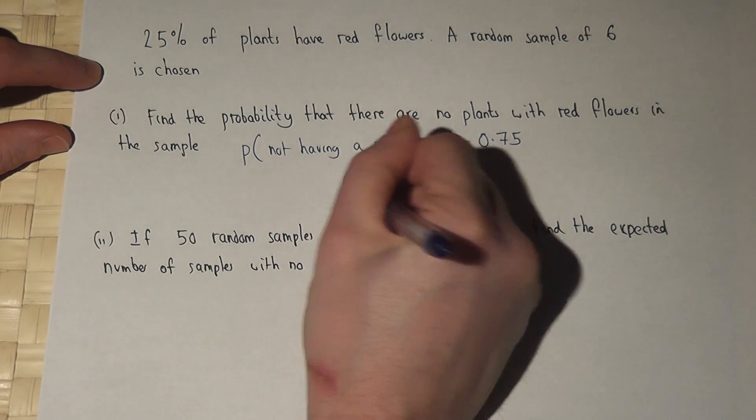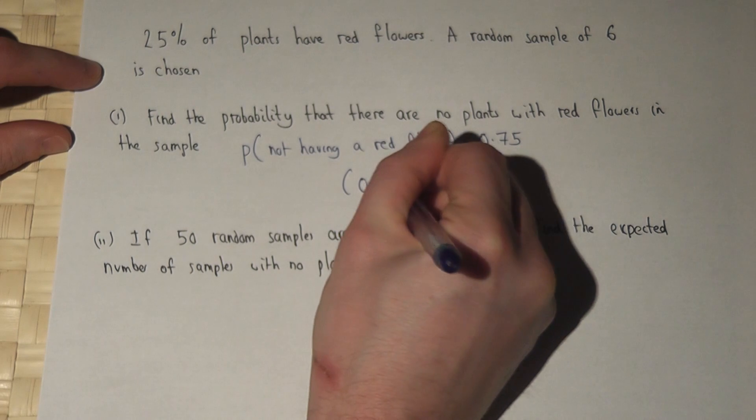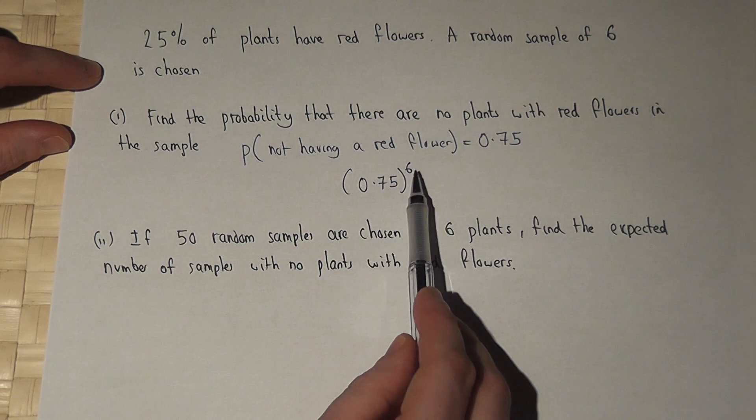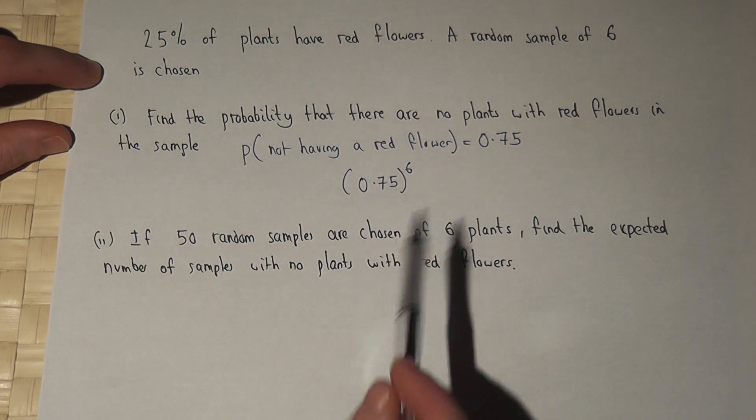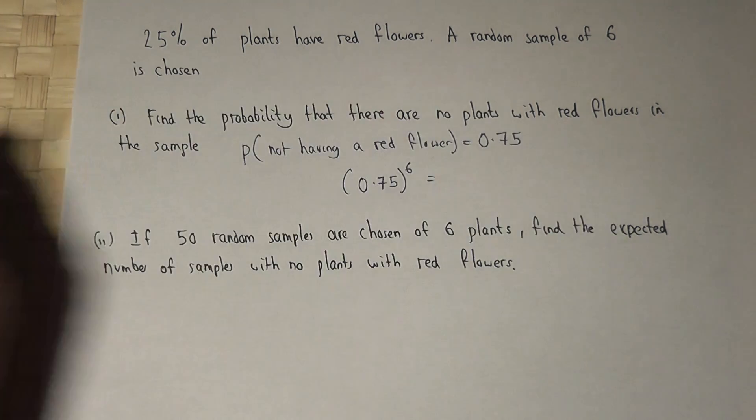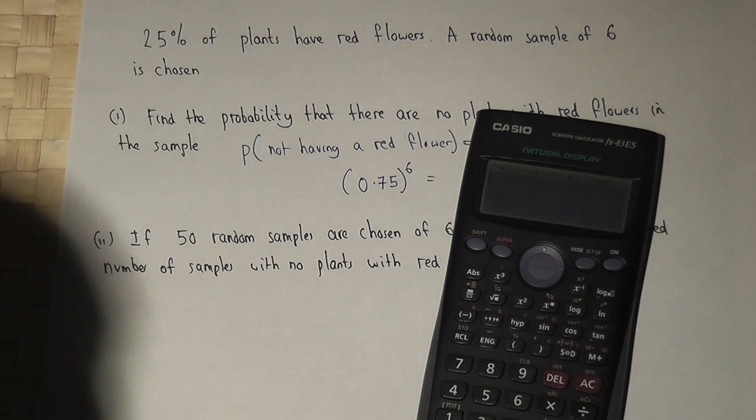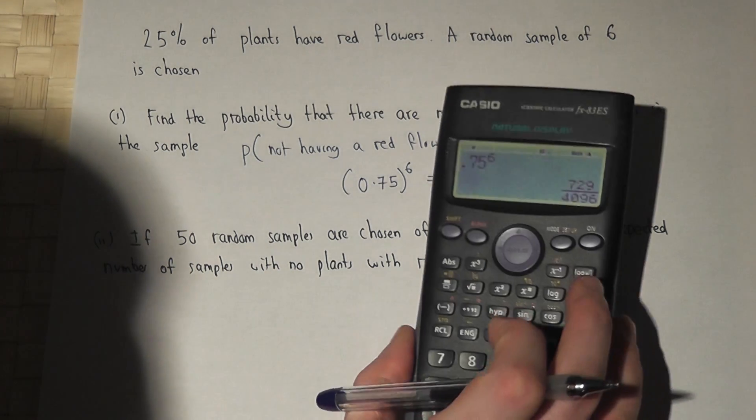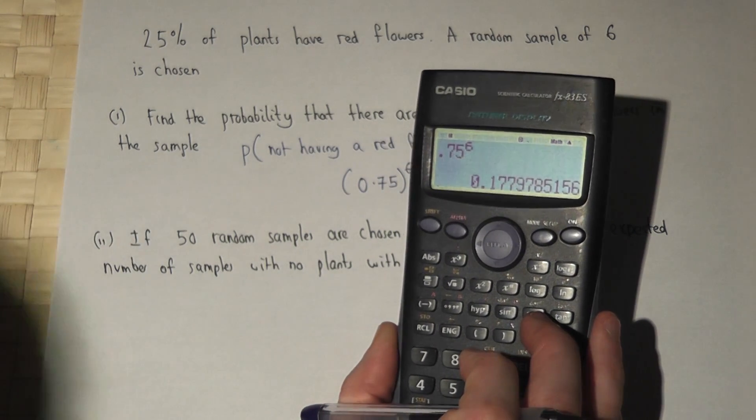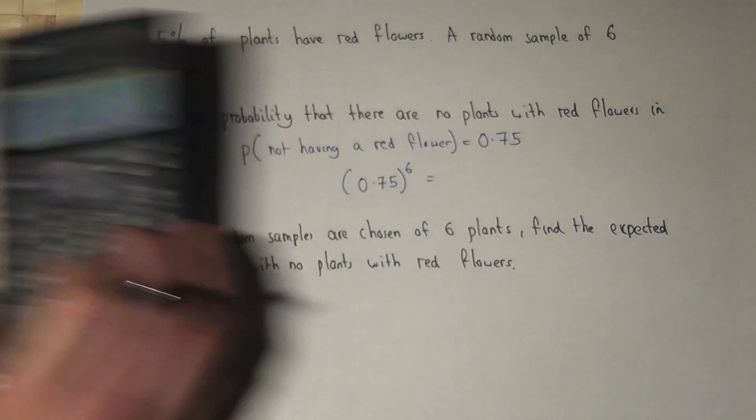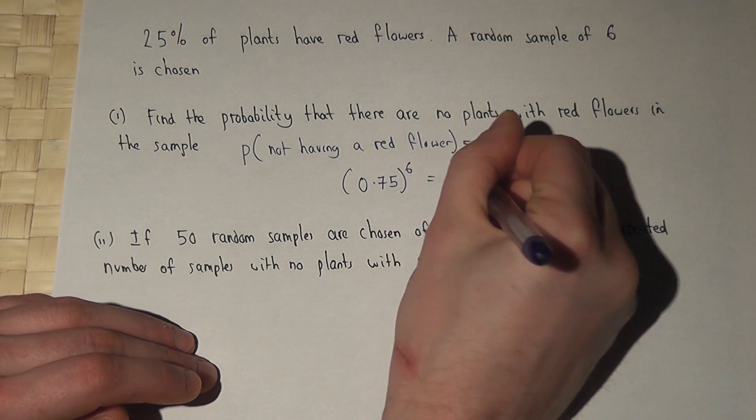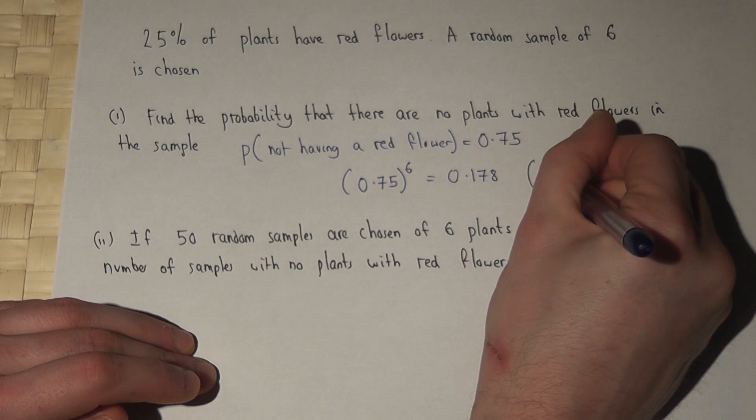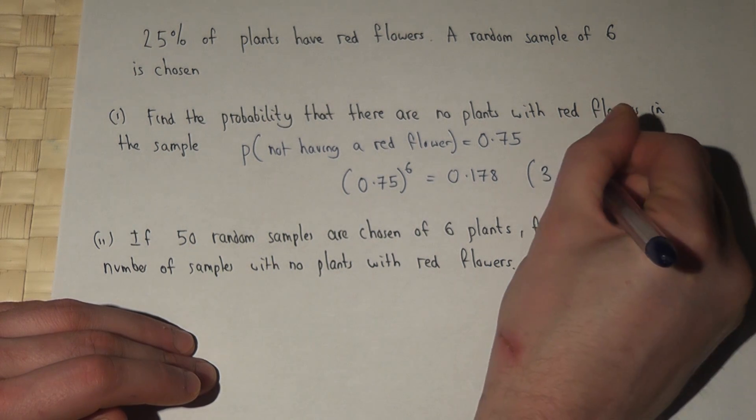You want all six plants to not have red flowers, so you work out 0.75 to the power of six and get 0.178 to three significant figures.